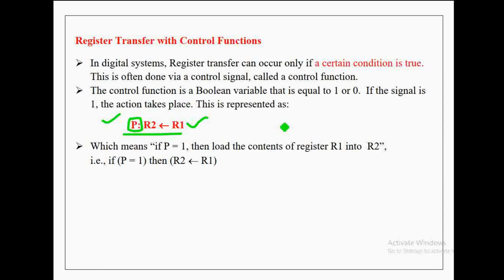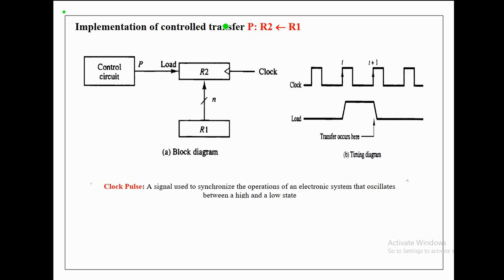The notation used is a variable name followed by a colon to indicate the control variable. Since p is the control variable, it is followed by a colon. In this register transfer statement, R1 is the source register, R2 is the destination register, and p is the control variable. The content of R1 can be loaded into R2 only when p equals 1.